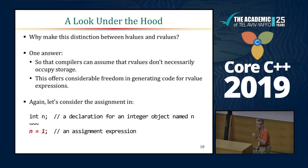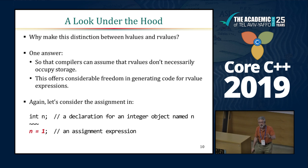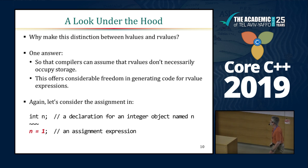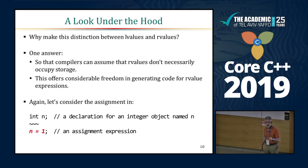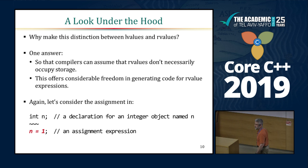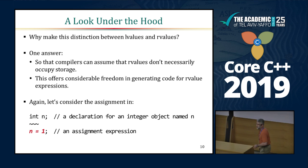Why does the language make this distinction? Because it gives the compiler a lot of freedom in how it can generate code, knowing that R-values are not obligated to occupy storage. Let's give a concrete example and go back to n equals 1.